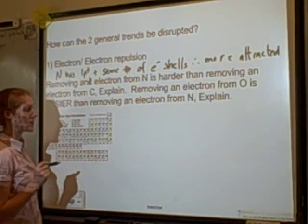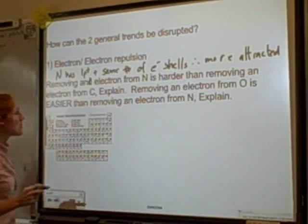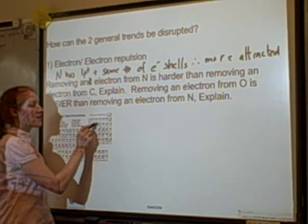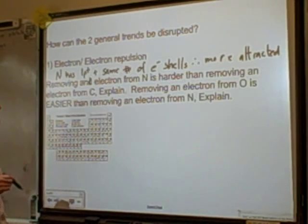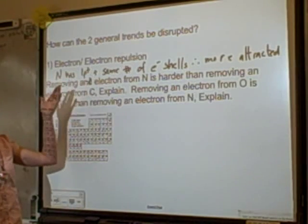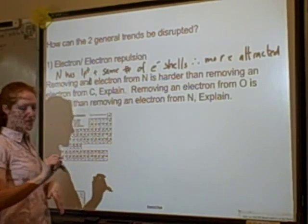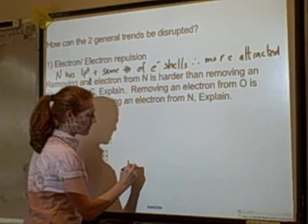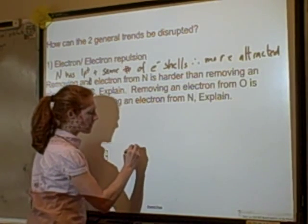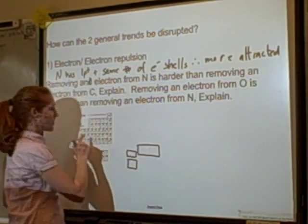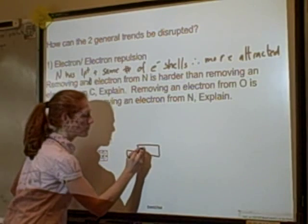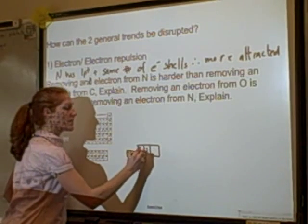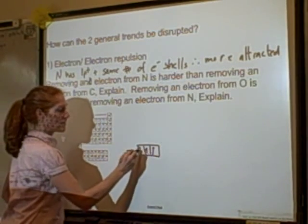Next, we'd expect oxygen to be more attractive than nitrogen, but we're told removing an electron from oxygen is easier than from nitrogen — explain. So it just got harder going to nitrogen, and then easier going to oxygen. Oxygen has one more proton than nitrogen with the same number of electron shells, so something is going against what we'd expect. That means we need to look at electron-electron repulsion, which we can see from the orbital box diagram.